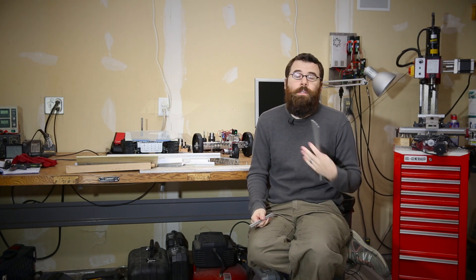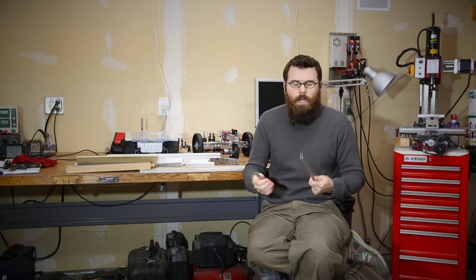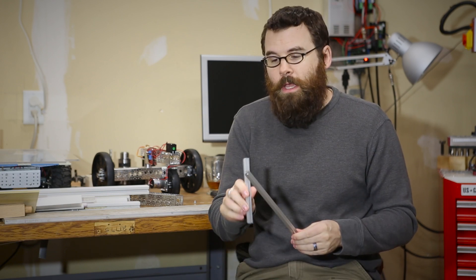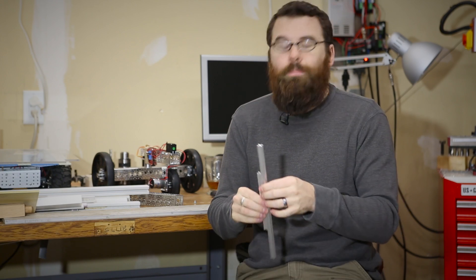A downside to MicroRacks and MakerBeam is they really don't have that many attachments. Things like linear bearings, linear slides, motor mounts, couplers, things like that. 8020 does have a pretty large catalog of those pieces. The MicroRacks and MakerBeam are relatively new to the scene and they just don't have as many additional pieces for them.